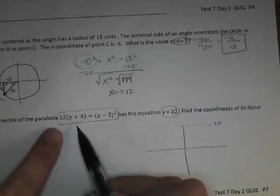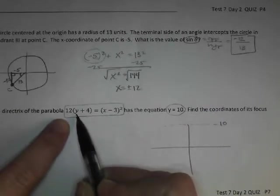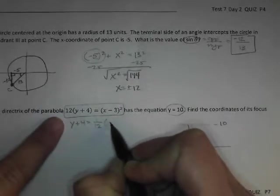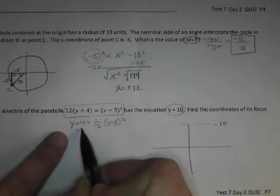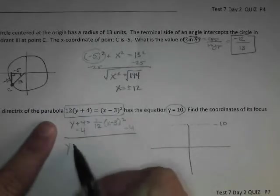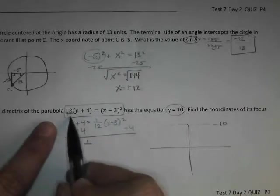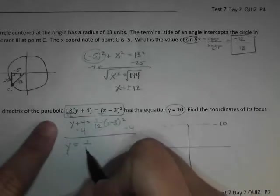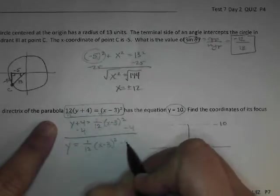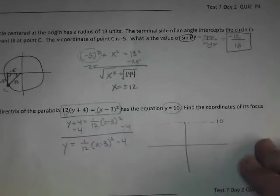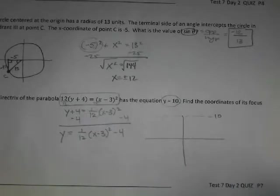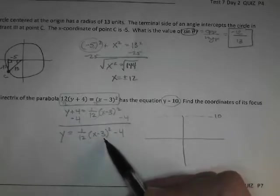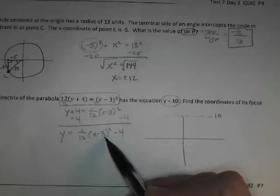And if I get y all by itself, I get y plus 4, and I divide the 12 over, it should be 1/12 x minus 3 squared. Oh, Jacob, I see what your problem was. But what happened to 12? I divided both sides by 12. So that became 1/12. I divided both sides by 12, and I got the same thing. But you asked a great question, and now I'm seeing how when I rewrote this, I screwed it up.